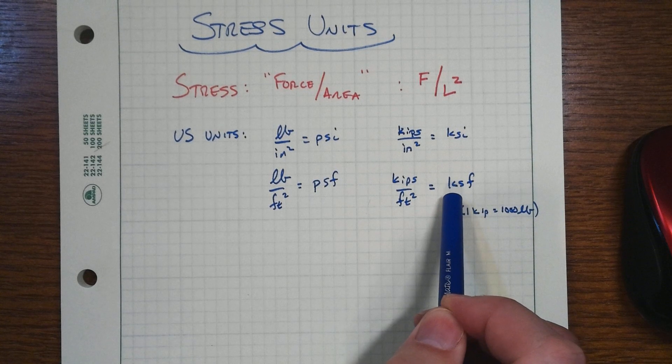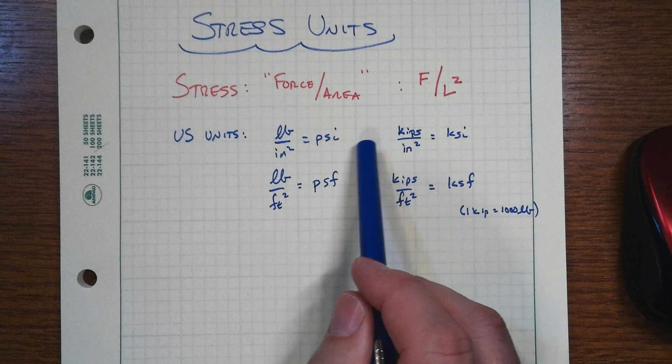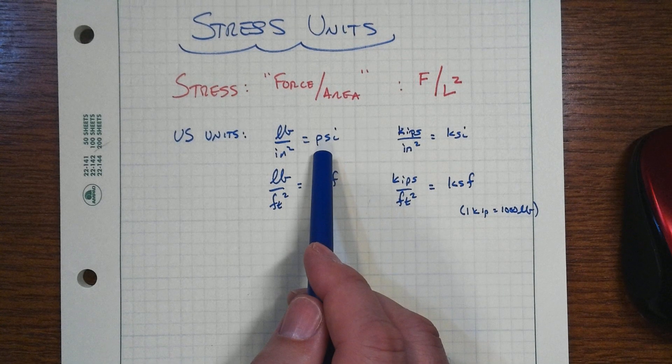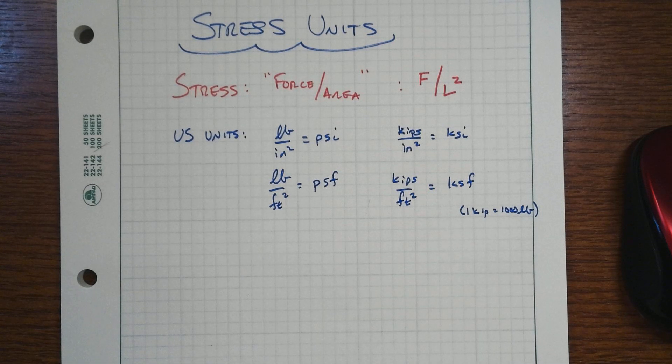When you're talking about soil properties, you'll oftentimes either be talking about KSF or PSF. It's just going to be three orders of magnitude difference between the two. If you're talking about concrete, you'll oftentimes hear about 4,000 PSI concrete. That's a normal weight, normal strength concrete.